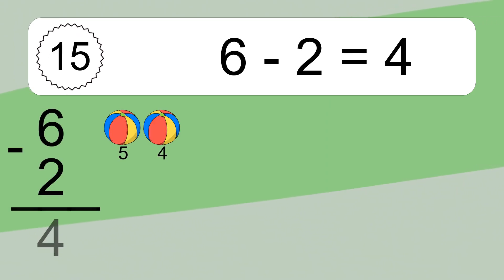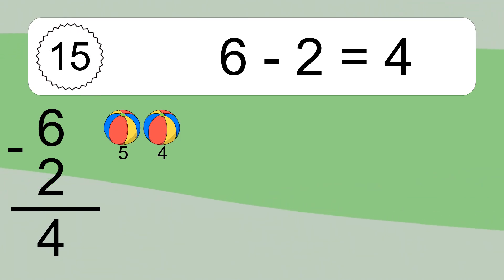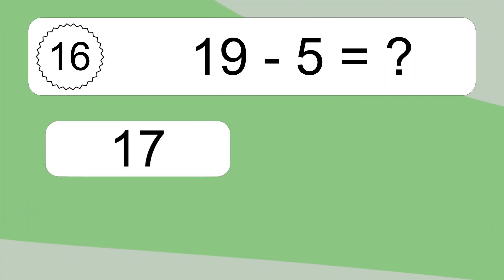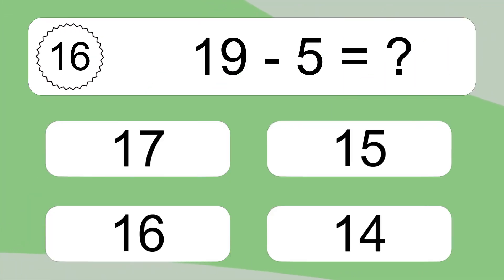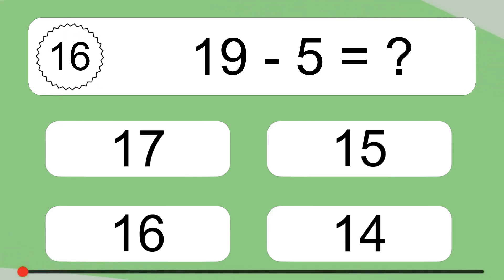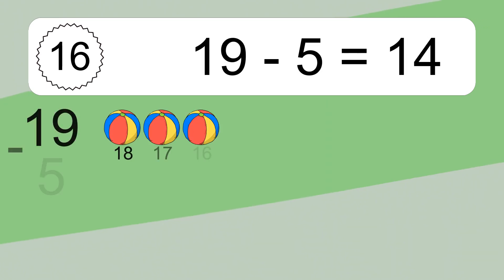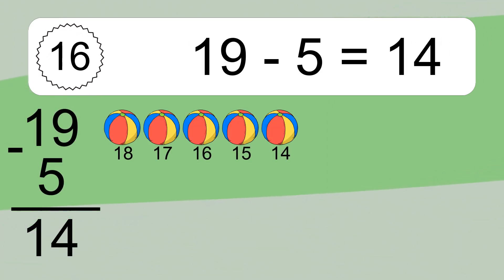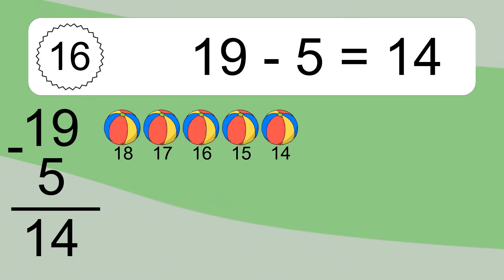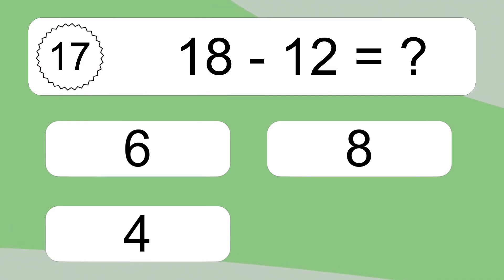6 minus 2 equals what? 6 minus 2 equals 4. Let's count it: 5, 4. 19 minus 5 equals what? 19 minus 5 equals 14. Let's count it: 18, 17, 16, 15, 14.